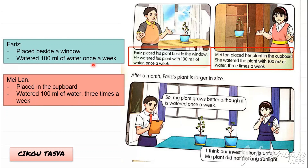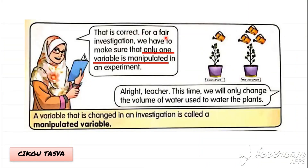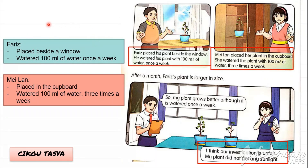So can you see? There are some changes. The first change is they differentiated the place they put the plant — Faris put it beside the window, Mailan put it in the cupboard. Another thing is they also changed the time — how many times they poured the water. Faris watered once a week and Mailan watered three times a week. While the amount of water given to the plant was 100 ml, which remained the same. After a month, Faris's plant is larger. Mailan thinks the investigation is unfair because her plant did not get any sunlight. For a fair investigation, only one variable should be manipulated.